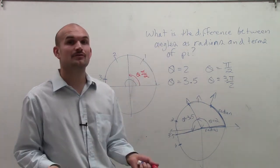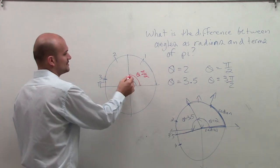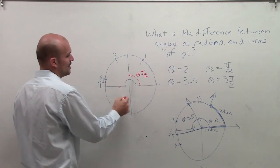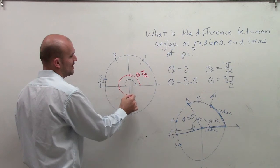Now, if I want to add a 3 pi over 2, that means, well, here's pi over 2, here would be 2 pi over 2, and then here would be 3 pi over 2.